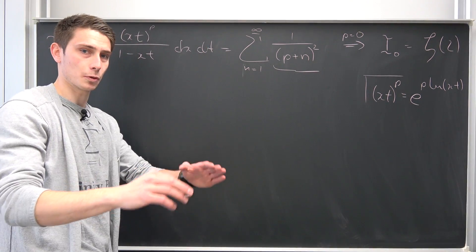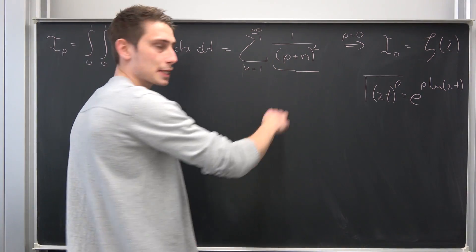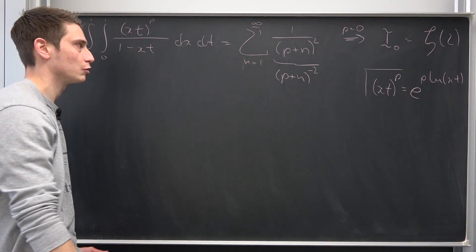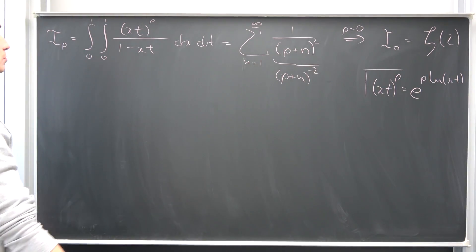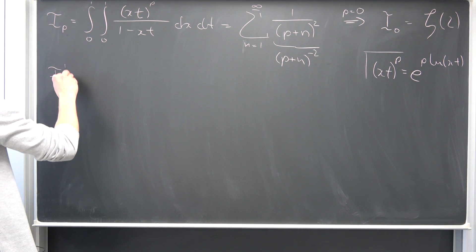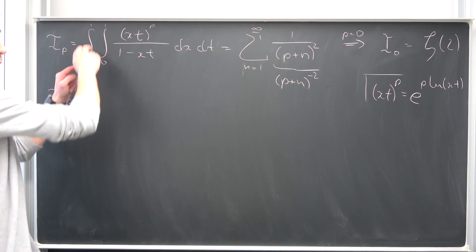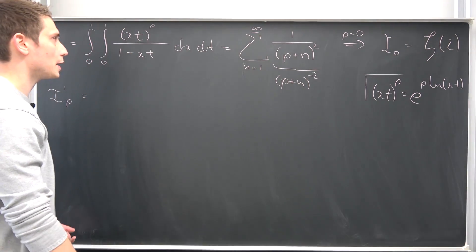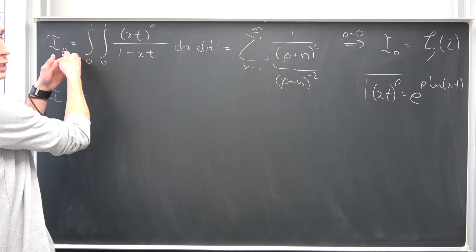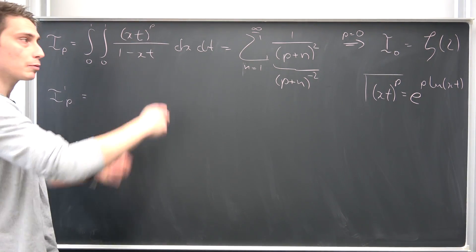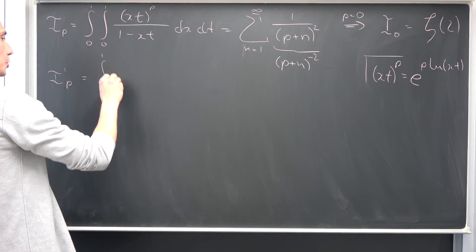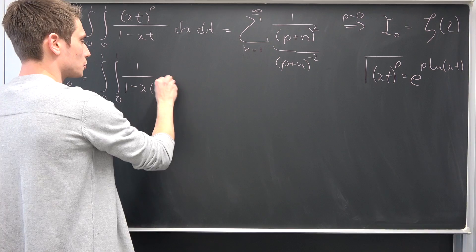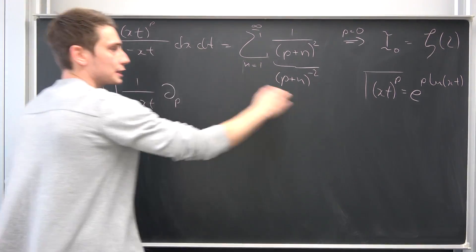Let us do the very first iteration. Also, for those not too comfortable with differentiation: 1 over (p plus n) squared is nothing but (p plus n) to the negative 2nd power. Now, I-prime of p: since the upper and lower bounds are independent of p, we use the special case of the Leibniz rule and bring the limit inside, differentiating partially with respect to p. That constant 1 over x times 1 over (1 minus x times t) — we differentiate the exponential chunk e to the p times ln(x times t) with respect to p.